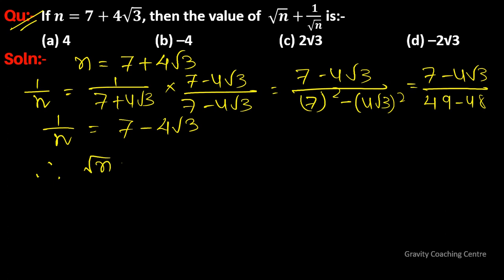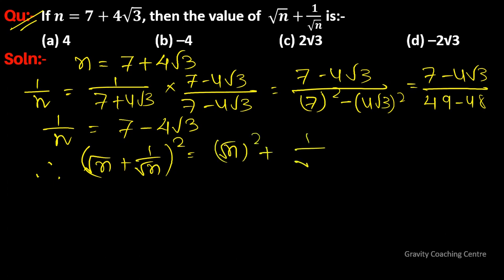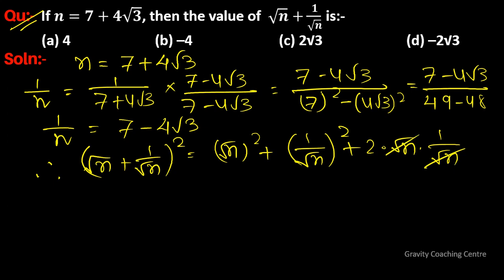Now, (root n plus 1 upon root n) whole square is equal to (root n) squared plus (1 upon root n) squared plus 2 times root n times 1 upon root n. Here, root n and root n cancel, giving n plus 1 upon n plus 2.